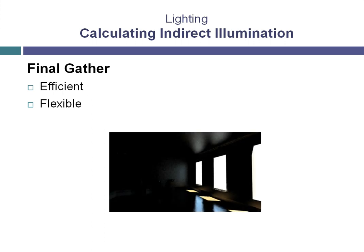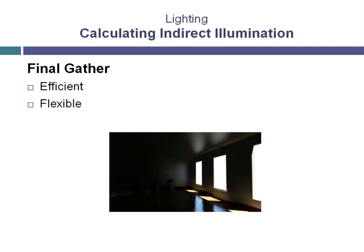If we render only the direct illumination, what we see is the sunlight that comes through the window, but the rest of the room is in complete darkness. The reason for this is that we're not calculating any indirect illumination, so there's no light bouncing around the scene. If we calculate just the indirect illumination coming from the sun only, we can begin to see how Final Gather takes the light coming in from the sun and bounces it around the room.